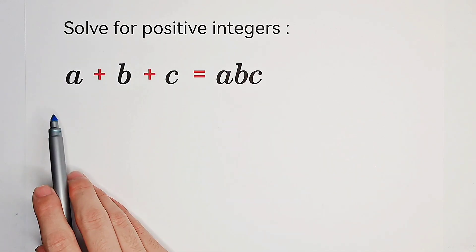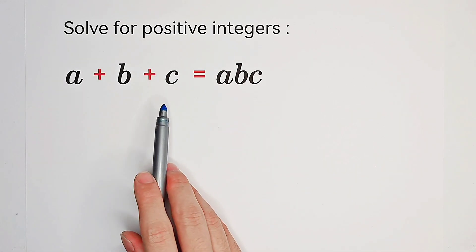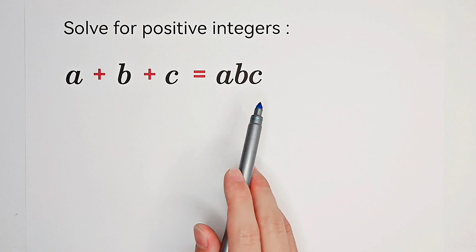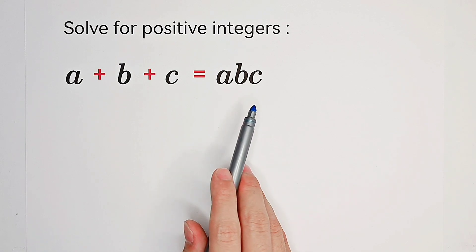Solve for positive integers A, B, C such that A plus B plus C equals A times B times C. How shall I do it?